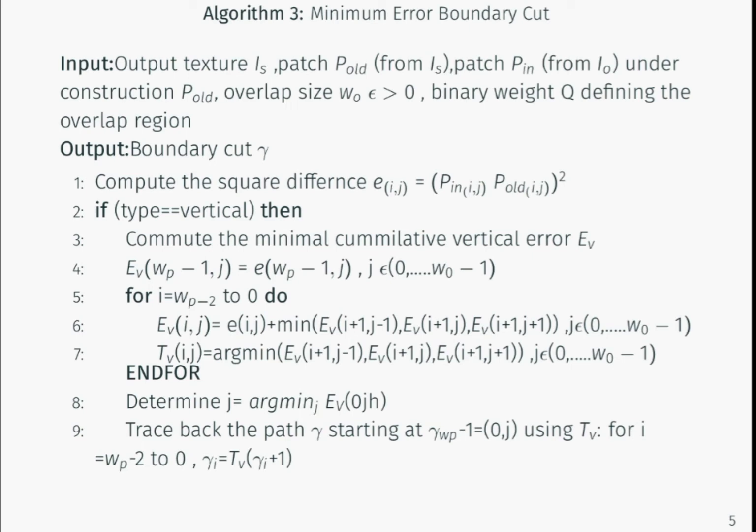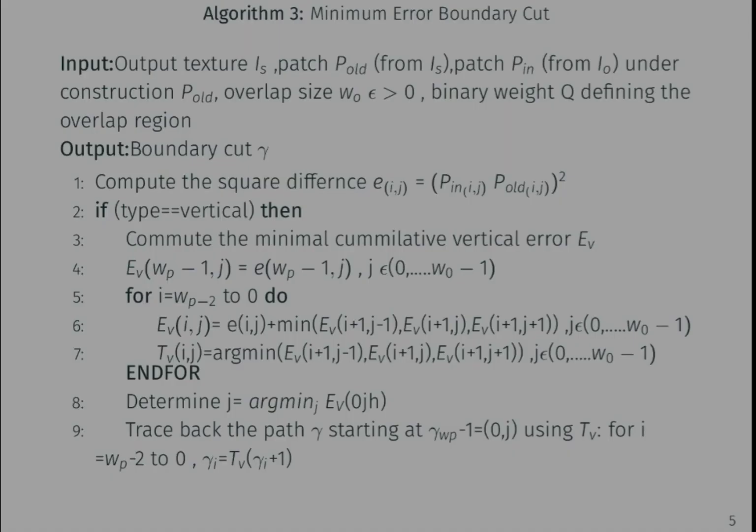Then, we find all admissible paths in the overlap region and compute their cumulative error. Cumulative error is the error that tends to add up or accumulate in the same direction. We select the path with the least cumulative error and use it as the optimal boundary cut.